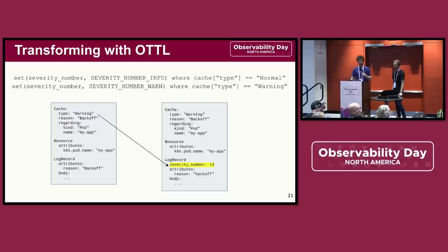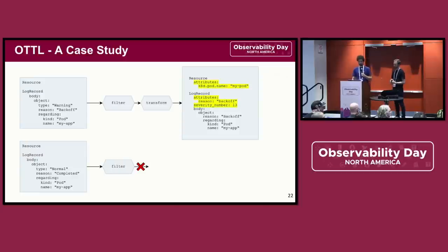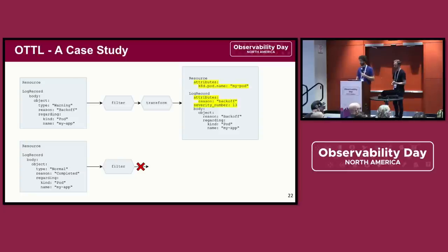With the transform processor and the filter processor in place using OTTL, we can achieve our goal. The top event is a backoff event, so we keep it and transform it. We started off with a basic log with just the event in the body, and it becomes a log rich with data that fills in all of its OTLP fields. It has a k8s.pod.name semantic convention on its resource attributes, the useful reason attribute, and we've set its severity number. The second log is the completed event, which we determined we don't want, so it's dropped during filtering. We do the filtering first so that we don't waste any time transforming data that we intend to drop.